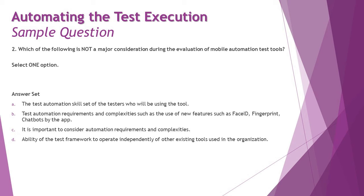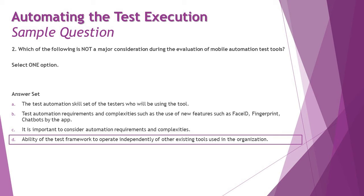Option D: ability of the test framework to operate independently of other existing tools used in the organization. Actually, it's the other way around — we always try to make sure whatever tools we adopt are able to sync, coordinate, and interoperate with other tools being used. It should not be independent, because data exchange happens through integration. So option D does not match the actual requirement, making the final answer D — operating independently of other tools is not a consideration when evaluating automation tools.